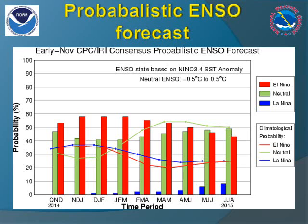Another way to quantify the spread and uncertainty in forecasting El Niño is by using probabilities of occurrence. In this graph, we see almost a 60% chance of El Niño becoming established through the winter season with declining probabilities thereafter. Neutral conditions are the most likely outcome by the end of spring 2015, with almost no chance of La Niña conditions ever developing.